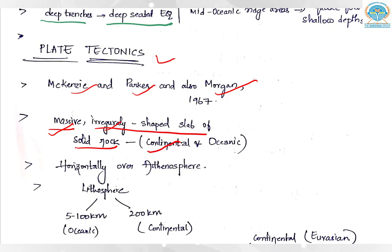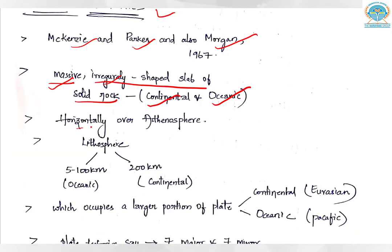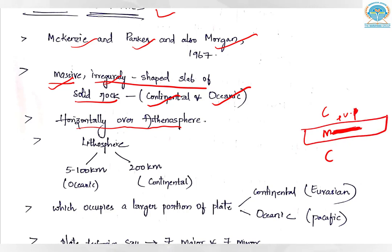Plates can be of two types: continental plates and oceanic plates. They are moving horizontally over the asthenosphere. When Earth had three layers — crust, mantle, and core — there is a semi-molten and plastic layer in the lower mantle. The lithosphere is crust plus upper mantle, and it rests on this plastic layer, which gives it movement and elasticity. Because of the asthenosphere, the plates start moving.